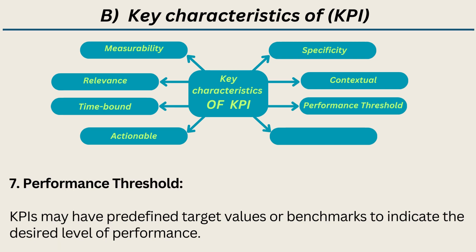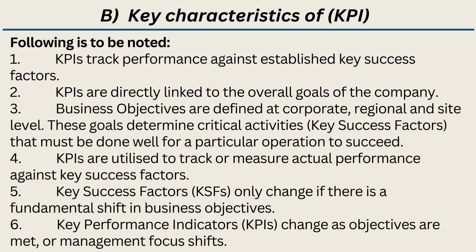6. Contextual — KPIs gain significance when understood in the context of the overall business strategy or project scope. 7. Performance Threshold — KPIs may have predefined target values or benchmarks to indicate the desired level of performance. Notable points: KPIs track performance against established key success factors and are directly linked to the overall goals of the company. Business objectives are defined at corporate, regional, and site level. These goals determine critical activities — key success factors — that must be done well for a particular operation to succeed. KPIs are utilized to track or measure actual performance against key success factors. Key success factors (KSFs) only change if there is a fundamental shift in business objectives. Key performance indicators (KPIs) change as objectives are met or management focus shifts.